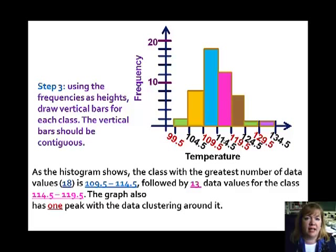You can look at this data now, and you can see that the class with the greatest number of data values is 109 to 114.5. The blue jobby. It's followed by 13 data values in the class, 114.5 to 119.5. So you see how the rectangle falls between that range of values. So you can easily see, most states fell into this range for their record high temperatures. The graph also has one peak. That'll become more important with the data clustering around it. So that's what you can tell from a histogram just looking at the graph.